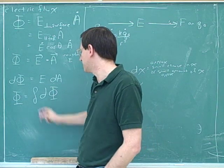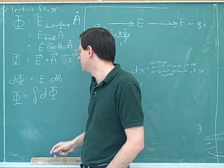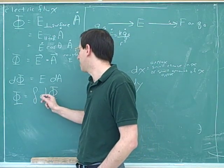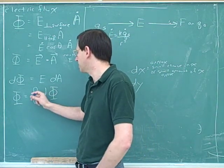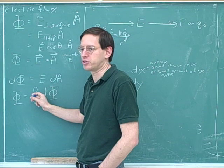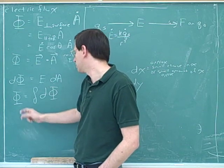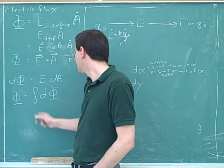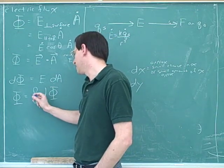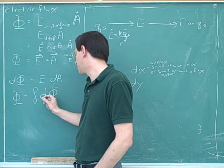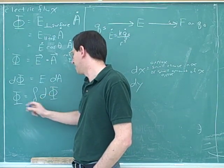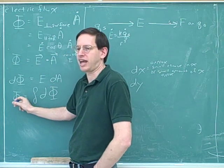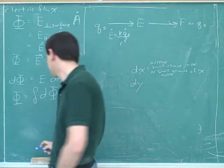The nice thing about the integral sign is it means two things: it means add up all the approximations and take the limit as they get closer and closer. So the integral of all these approximate small fluxes is the exact total flux.